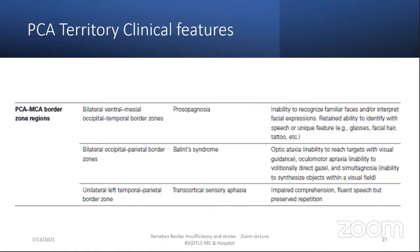Left paratemporal territory infarction causes transcortical sensory aphasia: impaired comprehension, fluent speech, but preserved repetition. These are important syndromes for the PCA and PCA-MCA border zone territories, and it is very important for us to remember them.